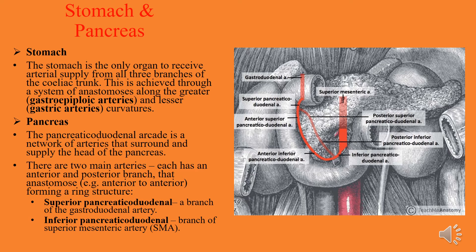The stomach is the only organ that receives arterial supply from all three branches of the celiac trunk. This is achieved through a system of anastomoses along the greater and lesser curvatures, with greater gastroepiploic arteries and lesser gastric arteries connecting via anastomoses.